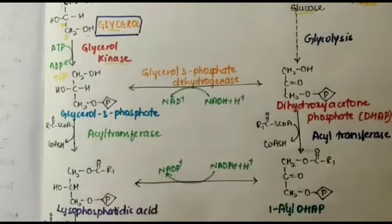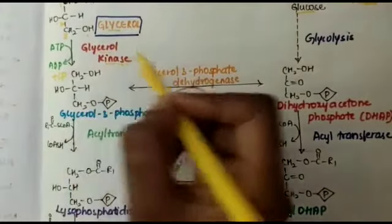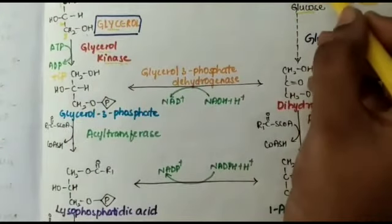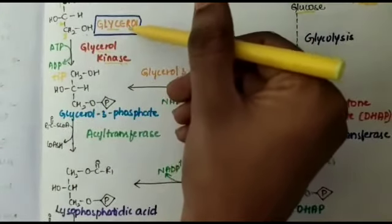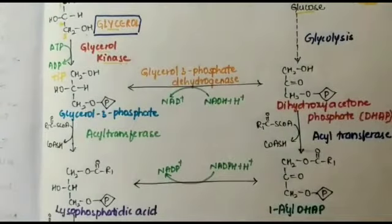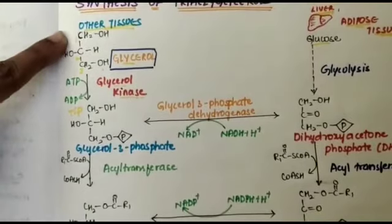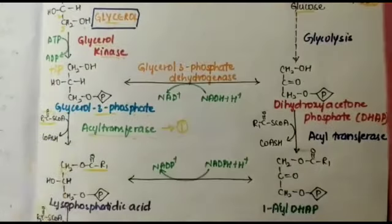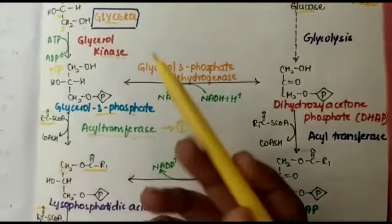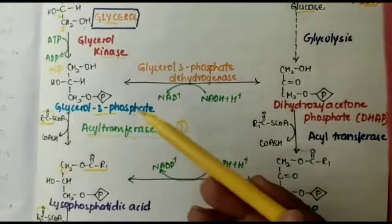You have to note that glycerol kinase is not present in the liver. So this glycerol is converted into triacylglycerol via some other tissues. Glycerol is converted into glycerol-3-phosphate as the first step.